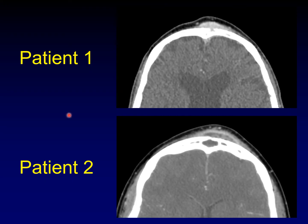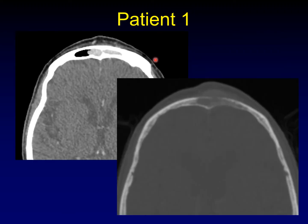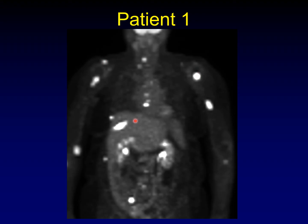Let's look at them individually. Patient number one has a solidly enhancing mass — uniform enhancement throughout the mass. There's a lot of destruction in the underlying bone, but the component of the mass within the frontal sinus also has uniform enhancement and a convex border. This is a solid uniformly enhancing tumor, probably a metastasis. In this particular patient with widespread osseous metastatic disease, this turns out to be a plasmacytoma in the setting of multiple myeloma.